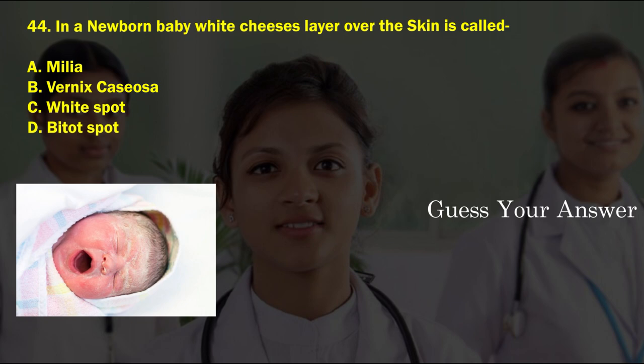In a newborn baby, the white cheesy layer over the skin is called — option A: milia, option B: vernix caseosa, option C: white spot, option D: birthmark. The correct answer is option B, vernix caseosa.